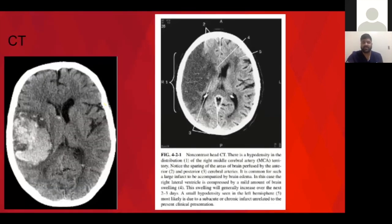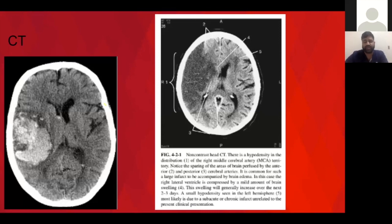These are some CT scans you might see. The one on the left — the hyperdensity is a hemorrhage, which would be a reason not to give TPA. The one on the right is a right MCA hypodensity — a pretty big MCA stroke, what we call a malignant infarct with midline shift. That is too much stroke to give TPA, because the more stroke that's developed, the higher the risk for hemorrhagic conversion due to breakdown of the blood-brain barrier.